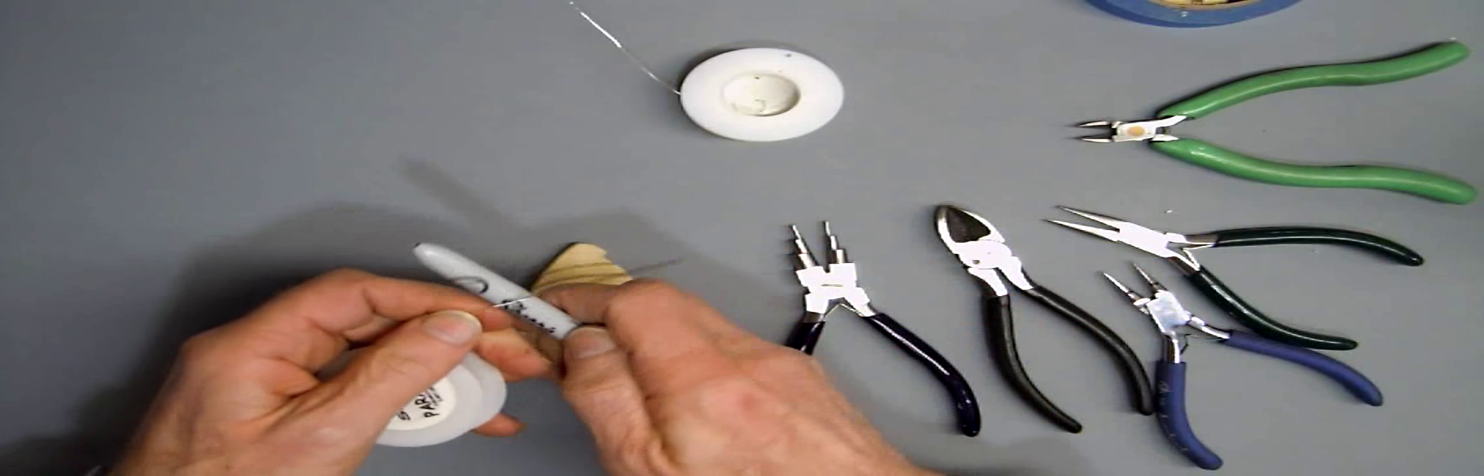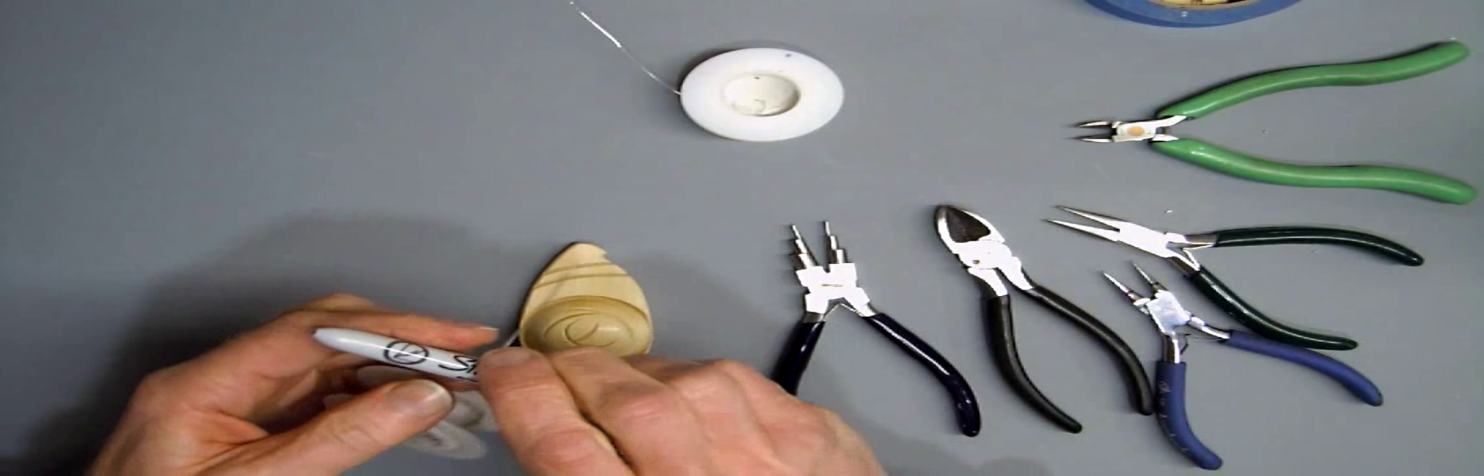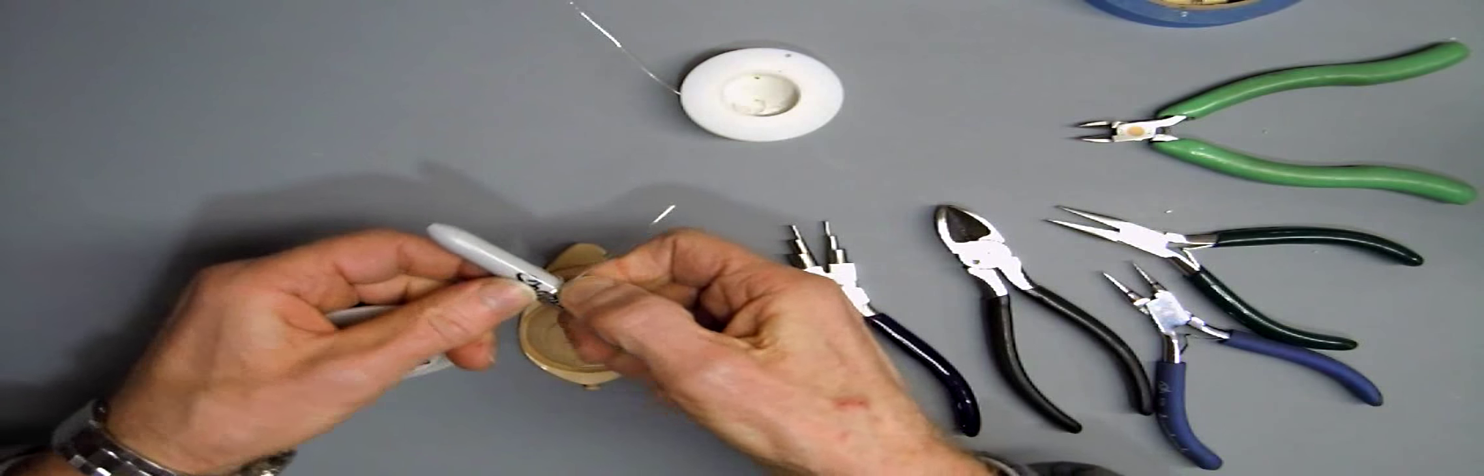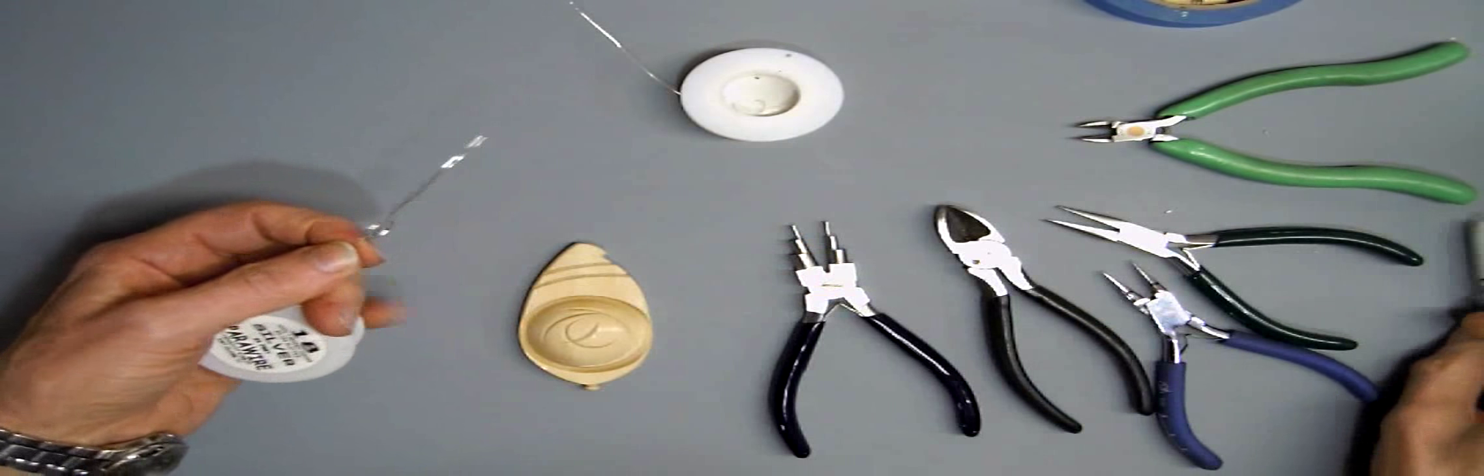First we are going to make a loop that will hold the pendant by winding it around a convenient mandrel, namely a Sharpie.